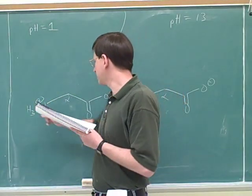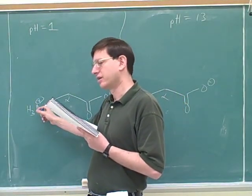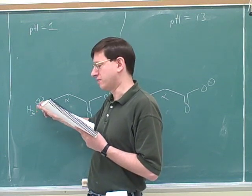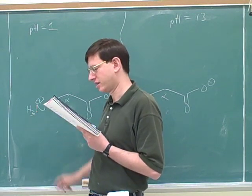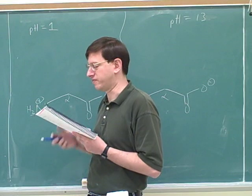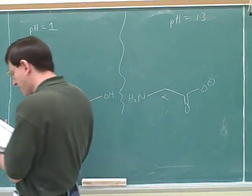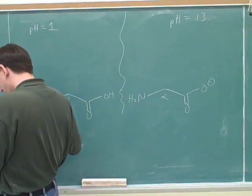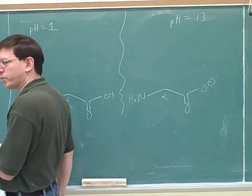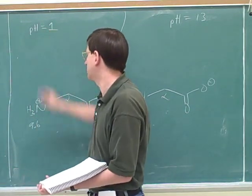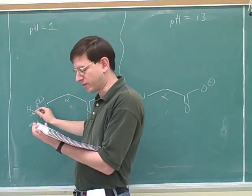What's the dividing line here? When does this nitrogen start protonating? How low does the pH have to be for this nitrogen to start protonating? 9.6. If you look at your table, the pKa of this nitrogen is 9.6. So as long as this pH was lower than 9.6, we would expect this to protonate.